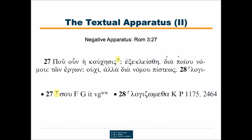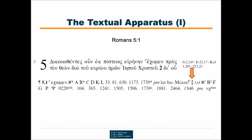Let us return to Romans 5 verse 1. I want to mention some more details of the apparatus. First, you see that a broken vertical line separates the variant reading from the reading of the text. Such lines also separate different variants within one unit. Solid vertical lines separate different apparatus units from each other.